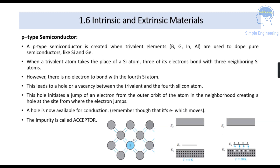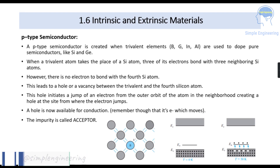Next is P-type semiconductor. In N-type we added a pentavalent impurity, whereas in P-type semiconductor we add a trivalent element such as boron, indium, or aluminium. These elements bond with silicon atoms. In this figure you can see that boron has only three electrons in its outer orbit. It will bond with silicon atoms, but since silicon has four electrons, there will be one silicon atom with no electron to bond with. This leads to a hole — a vacant position — between that trivalent atom and the fourth silicon atom. This hole initiates a jump of an electron from the outer orbit of a neighboring atom, and the hole becomes available for conduction. The impurity added in P-type semiconductor is called an acceptor.